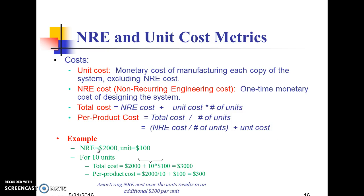For example, if NRE cost = $2000 and unit cost = $100, for 10 units: Total Cost = $2000 + (10 × $100) = $3000. Per product cost = $2000 / 10 + $100 = $300.